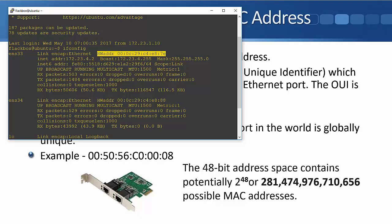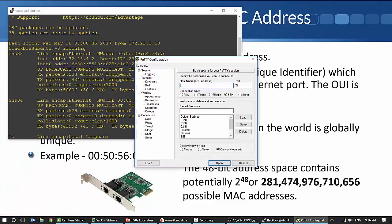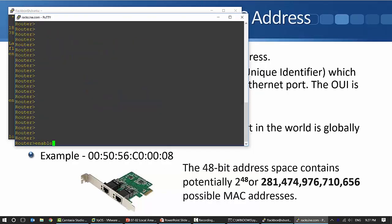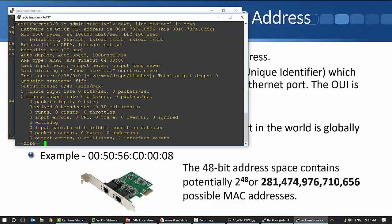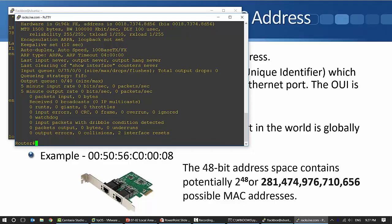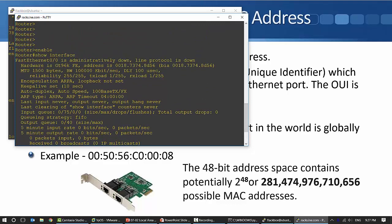That's how we find the MAC address on Windows and Linux. Finally, let's have a look on a Cisco router or switch. I'm going to open up another PuTTY session, and this time I'm going to SSH onto my router. I need to enter enable to get to the enable prompt. Then the command is show interface. This is going to give me a heap of output about all my different interfaces. I could have just entered one interface if I wanted to more target the output. I can see on Fast Ethernet 0/0 the address is 001873748D56.